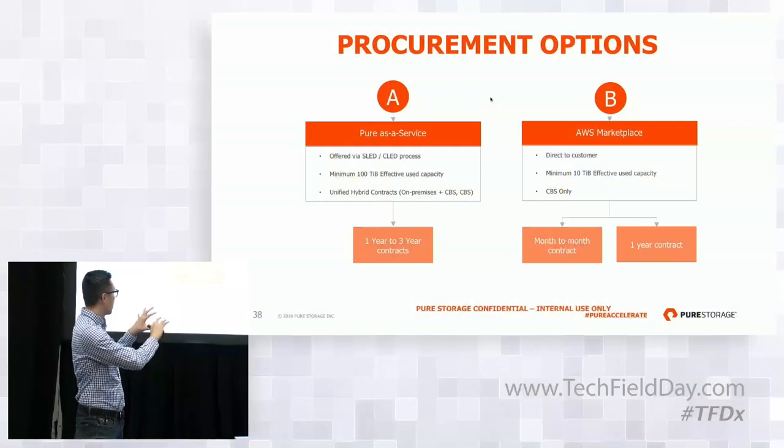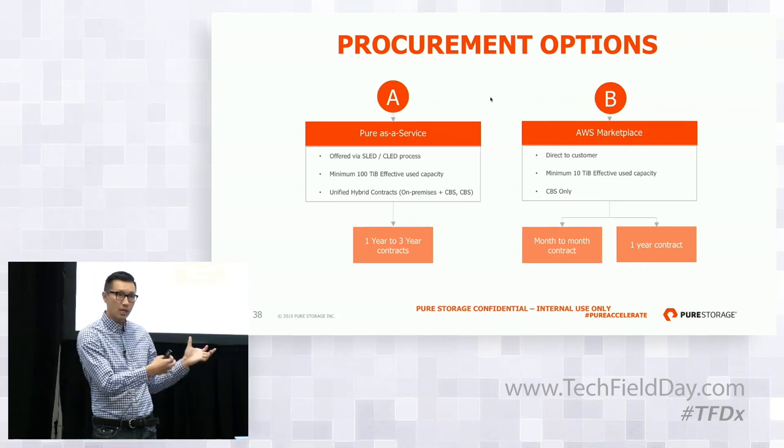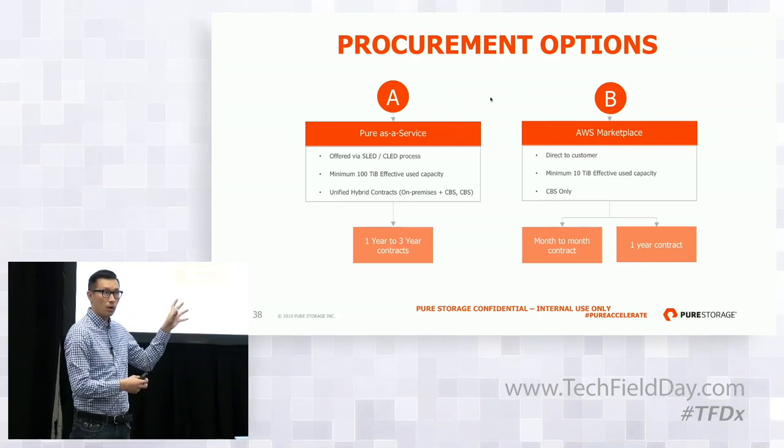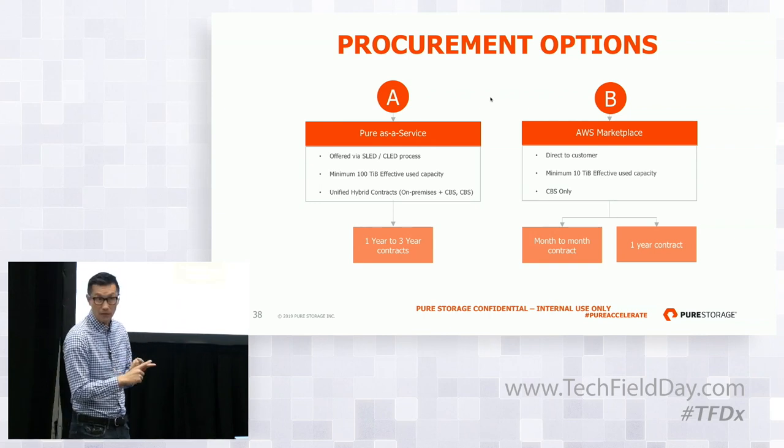The AWS Marketplace option is more of a short-term, month-to-month model. The month-to-month contract is for the CBS service, while the underlying AWS hardware is separate. This suits customers who don't want to commit long-term and want to try it out first. The EC2 instances and related resources can be spun up and down on demand.